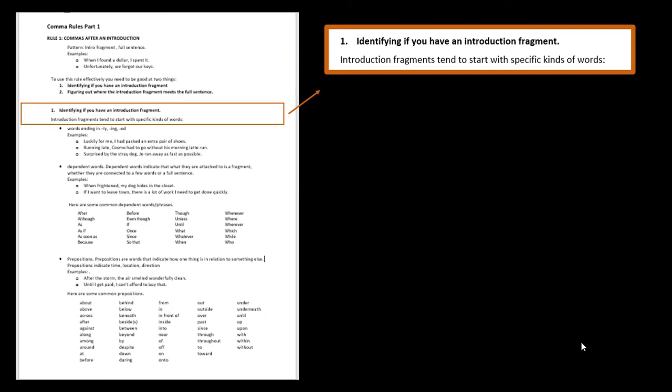So introduction fragments have a tendency to start with specific kinds of words. So they start with words ending in -ly, -ing, and -ed. They start with dependent words like when, if, as, because, or they start with prepositions like under, over, after, things like that. We're going to focus on each kind of those words so that you know what I'm talking about and are prepared to recognize when your sentence starts with one of these kinds of words.